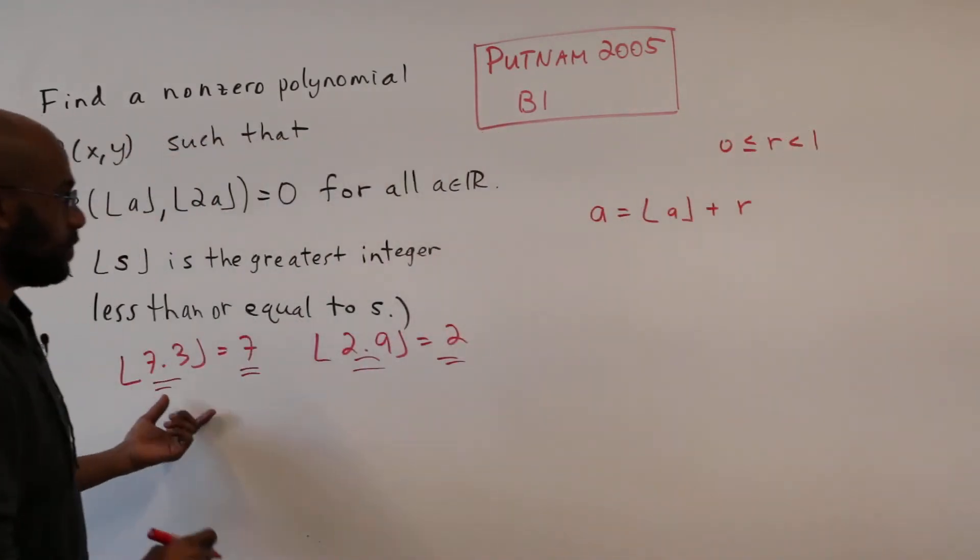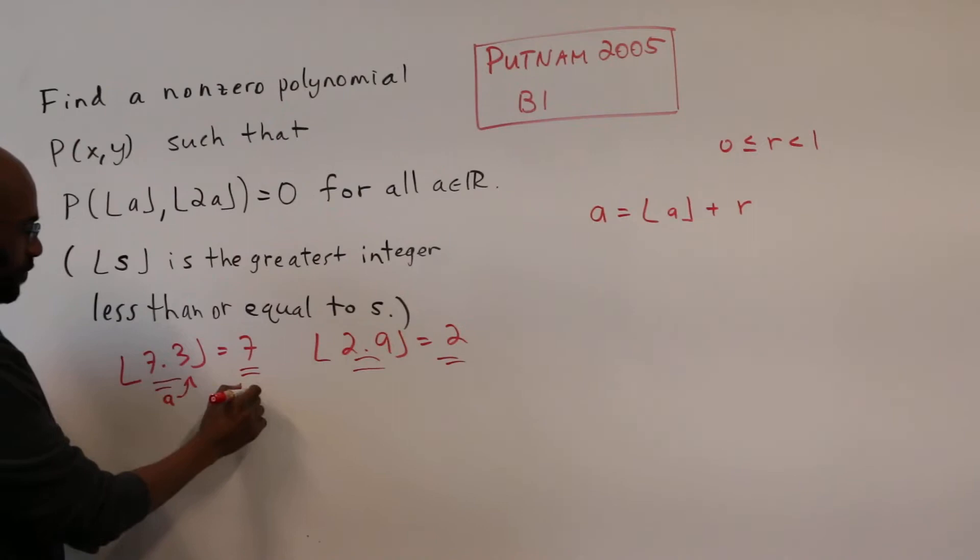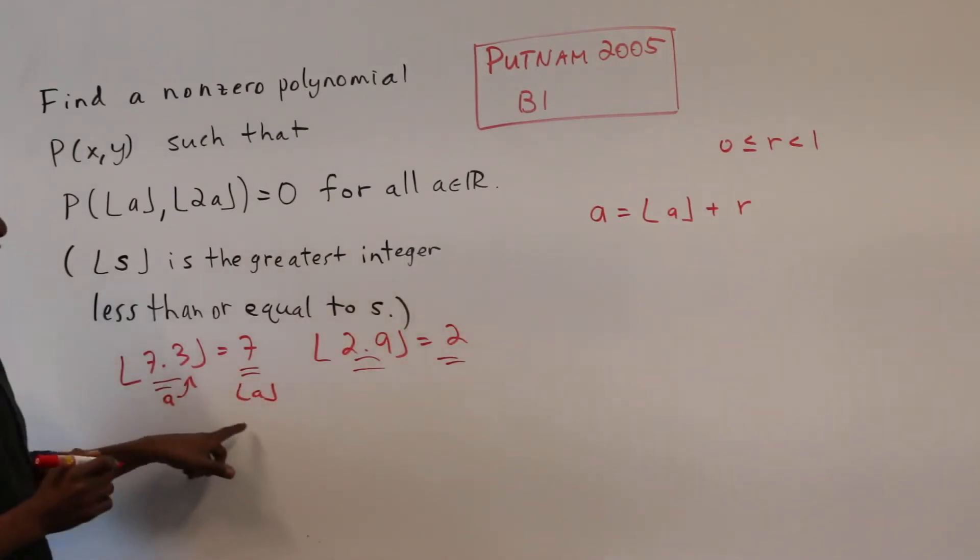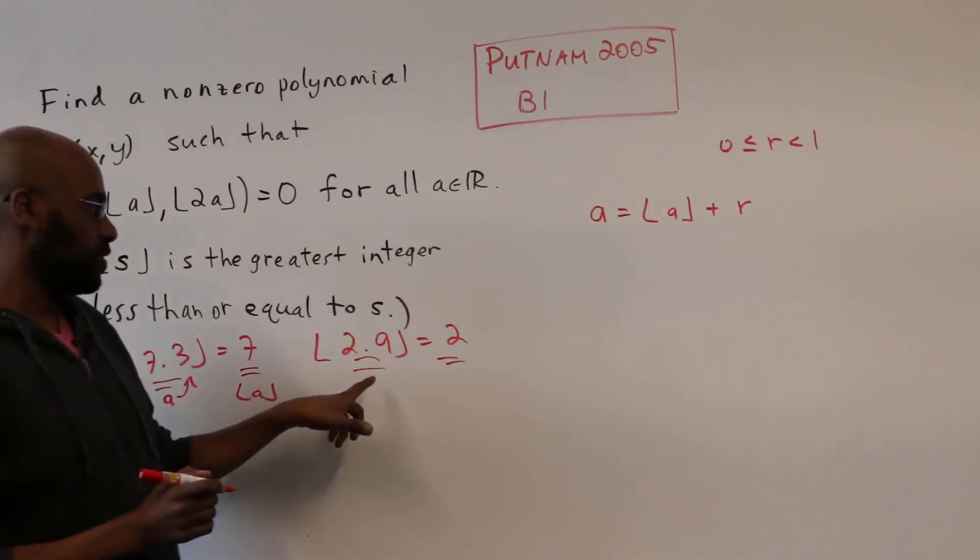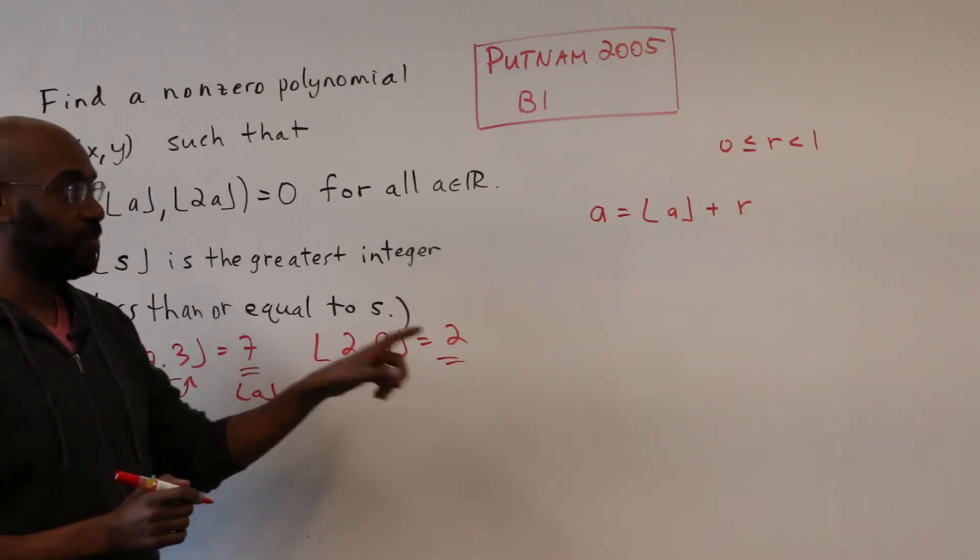So for example, here, if this is a, this is the floor of a, so a is the floor of a plus 0.3, whereas here a is the floor of a plus 0.9.